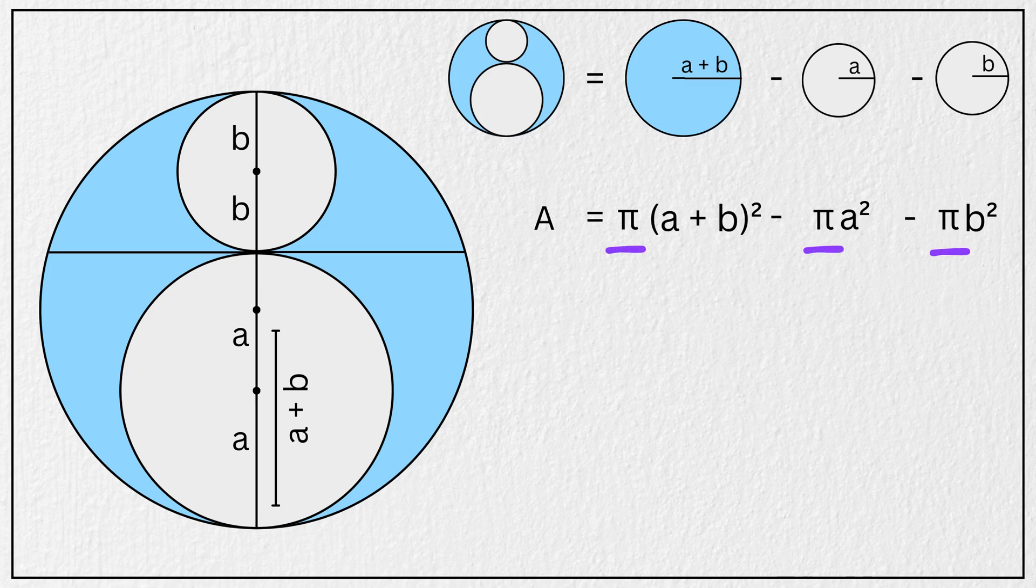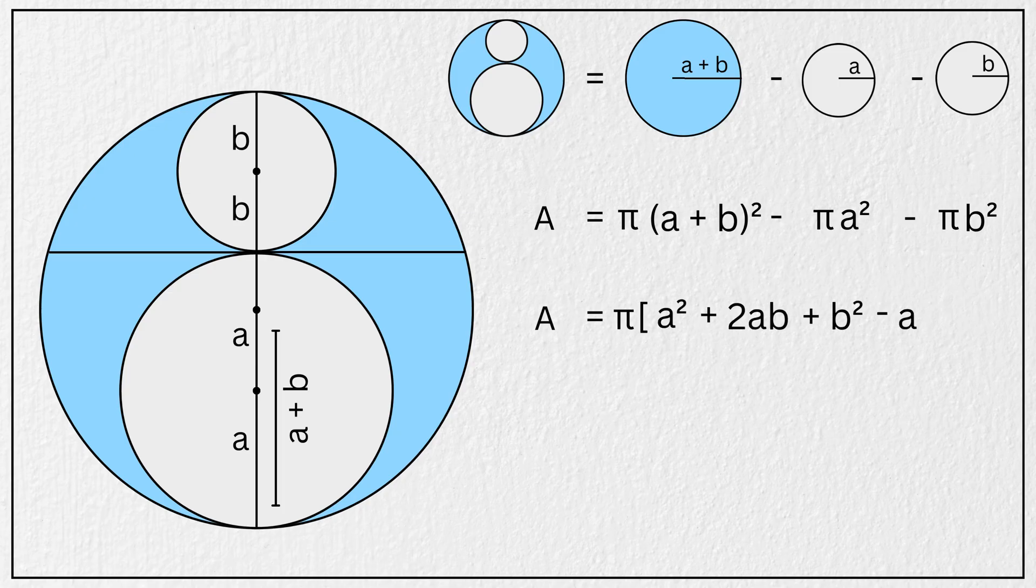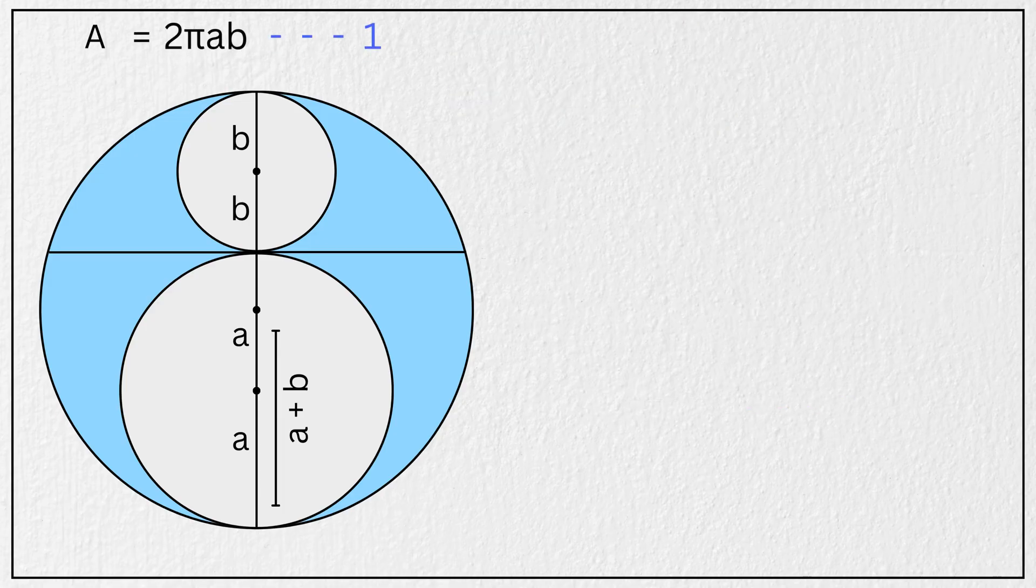Now taking π common and simplifying this using the algebraic identity, we have area equals π times the quantity A squared plus 2AB plus B squared minus A squared minus B squared, and canceling A squared and B squared both sides, we are left with area equals 2πAB. Let us mark this as equation 1 and put this here.